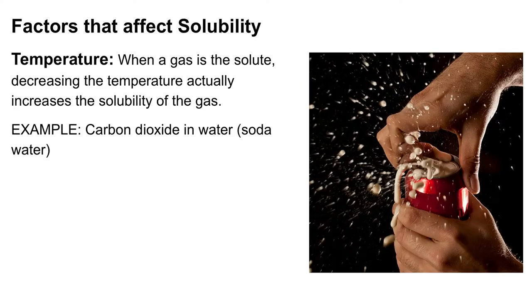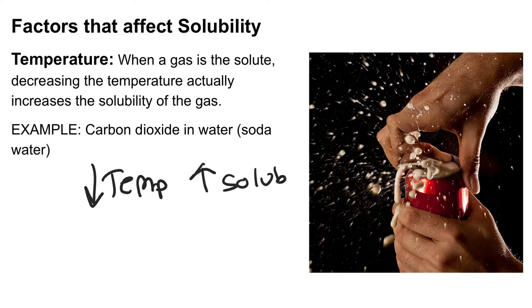The difference between gases versus liquids and solids is that when you increase the temperature of a gas, you decrease its solubility. For gases, decreasing temperature increases solubility. For example, carbon dioxide in water — which is what makes soda — when it's colder, more of the CO2 carbonation is dissolved. If you leave soda out and it's warm, the carbon dioxide leaves and it becomes flat soda.